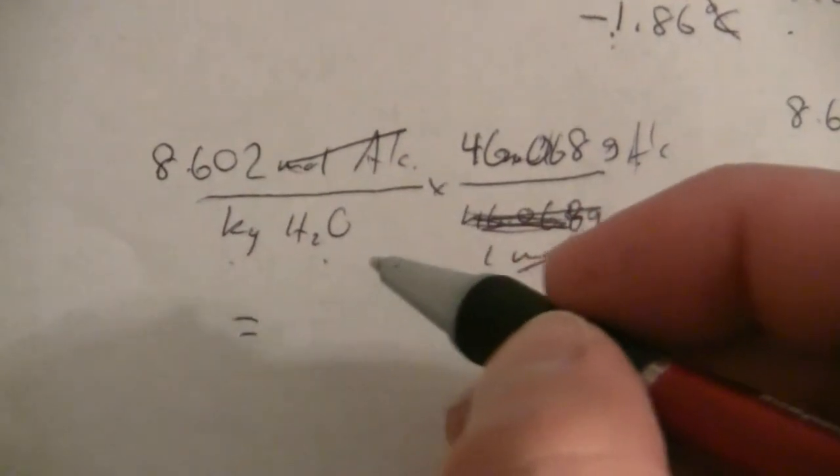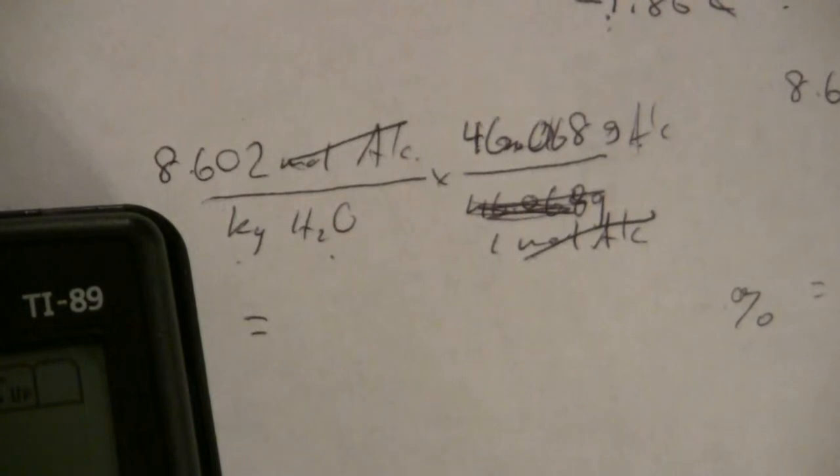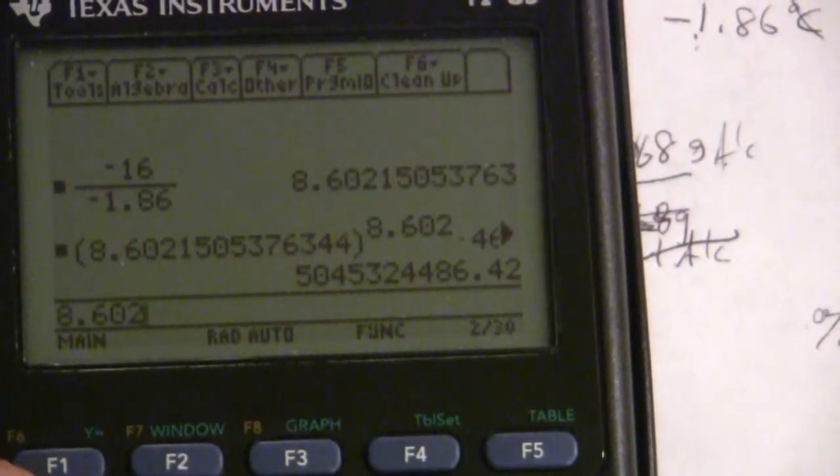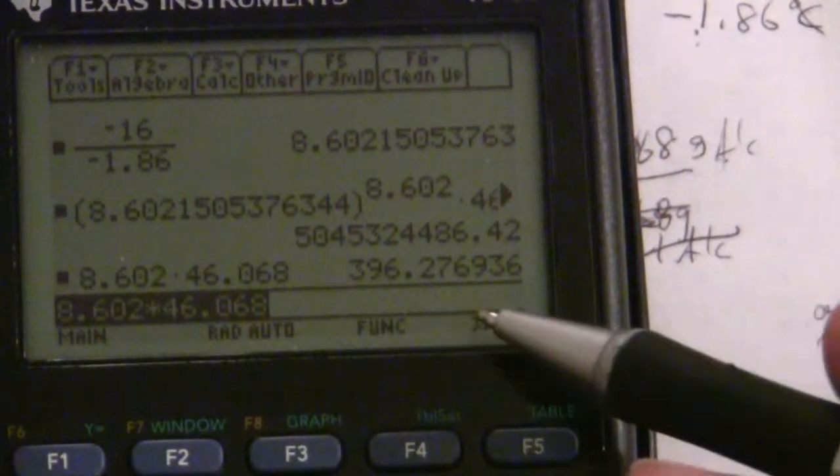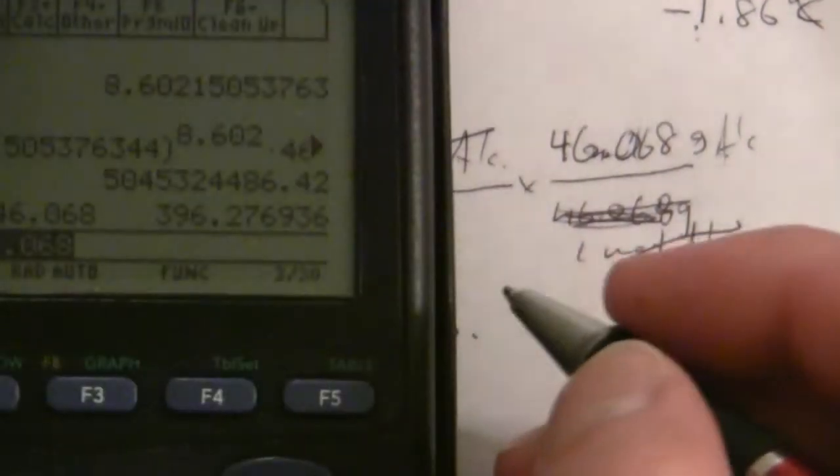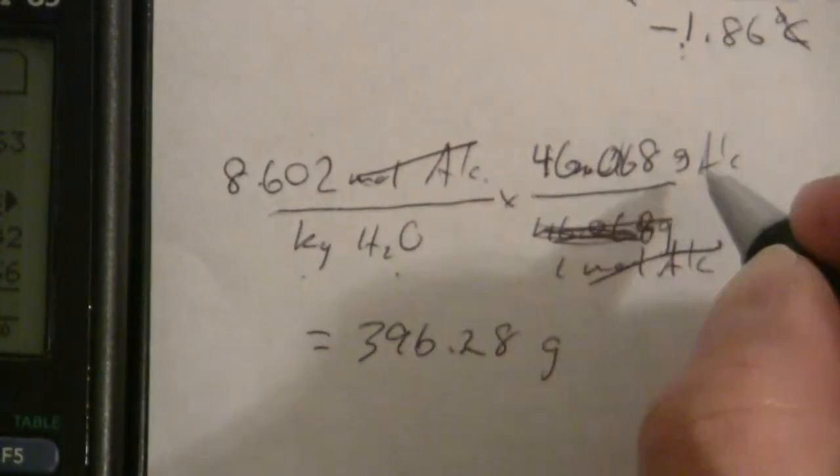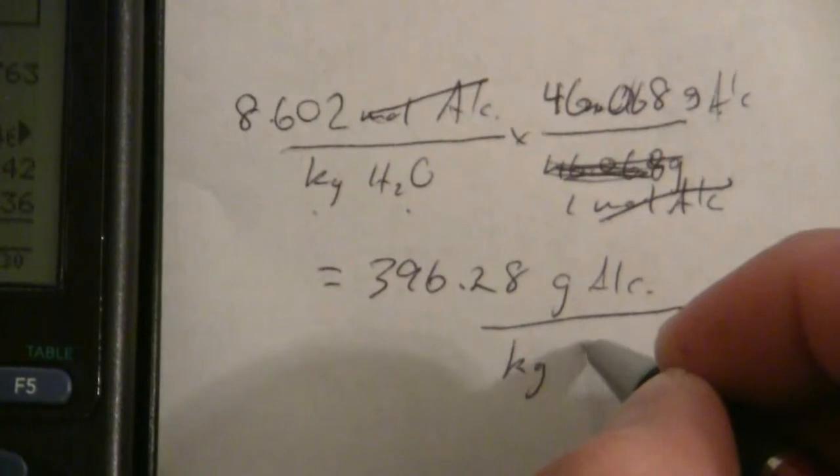So let me go ahead and calculate this first, and then we will reference that. So 8.602 times 46.068, and I end up, let's try that again, times 46.068, there we go, 396.3. I'll go ahead and pull it out a little bit further, and that's grams of the alcohol per kilogram of water.